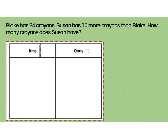So Blake has 24 and Susan has 10 more than 24 so that means I would add because I have more. So I'm going to add 10 which is a multiple of 10 to find my answer.